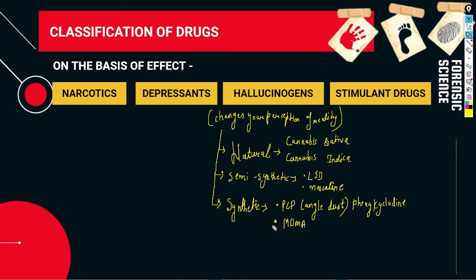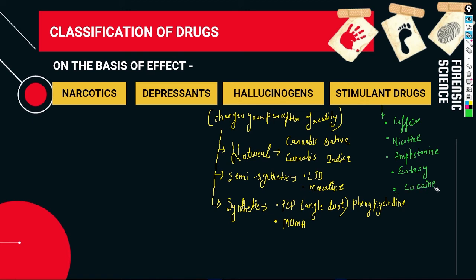The fourth category is stimulant drugs. These include caffeine, nicotine, amphetamine, ecstasy, and cocaine. Caffeine is also present in coffee in some amounts, and nicotine is present in tobacco. Amphetamine, ecstasy, and cocaine are also stimulants.